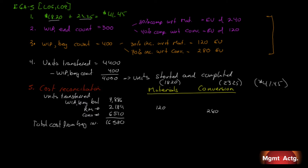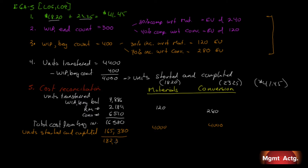Next, for units started and completed: 4,000 units are 100% complete for both materials and conversion. Multiplying 4,000 by the total cost per equivalent unit of $41.45 gives $165,380. Adding the beginning inventory cost of $16,580 gives a total cost of units transferred of $182,380 — wait, correcting: $7,886 plus $2,184 plus $6,510 plus $165,380 equals $182,380 total cost of units transferred.